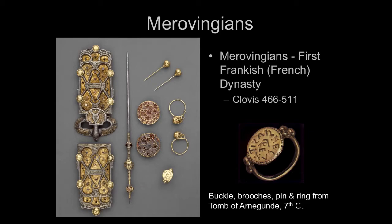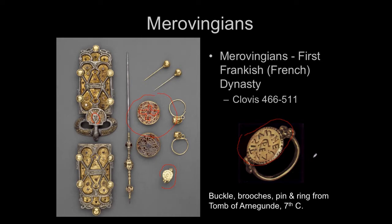The artwork the Merovingians produce is very similar to what we saw in the British Isles. You can see it uses the cloisonné technique — compartmentalized gold wire with garnets in settings. But you'll notice there's a cross here; they have converted to Christianity. We have faces and hidden items in the decoration — a love of ornament. Here is the signet ring of Arnagundus, with the name inscribed in Latin. They had adopted Latin and Christianity, but the artwork is still this barbarian or migrational style.